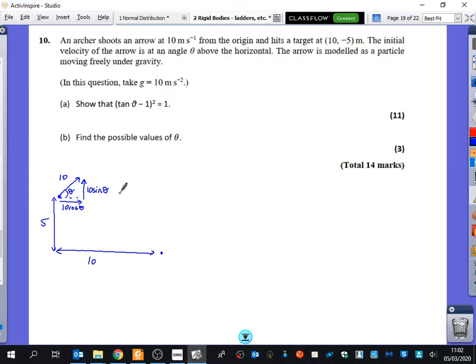And we want to figure out that tan theta minus 1 squared is equal to 1. So the pathway it takes is obviously this, where it hits down there. What are some of the things you know you're going to have to do? Horizontal motion.